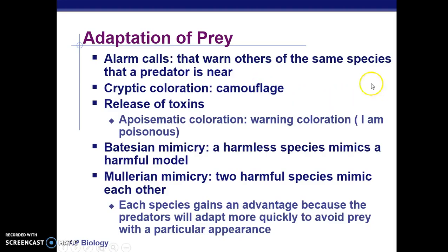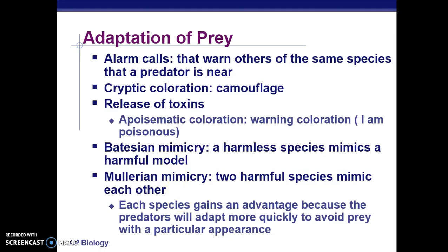There's also camouflage, which we'll look at examples of in a moment. Some organisms, when in the presence of predators, will release toxins that are poisonous to the predator. And then we have two types of mimicry that we're going to look at, though we're not going to focus heavily on the difference between the two.